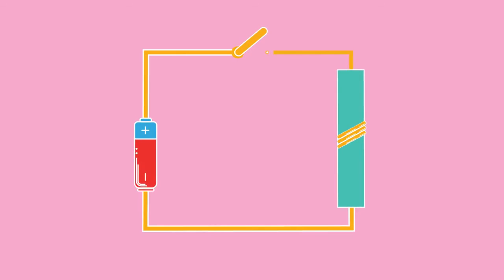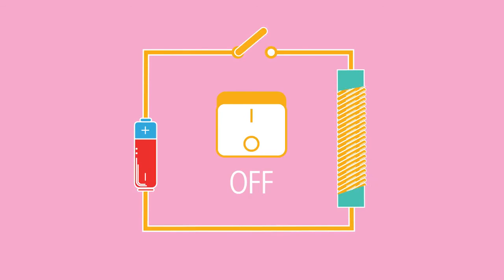So there you have it. Electromagnets are extremely useful, and we can switch them on and off, as well as control their strength.